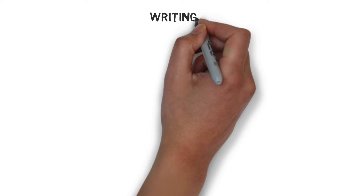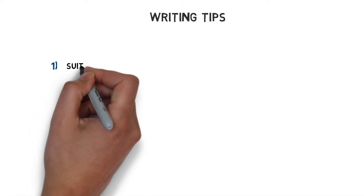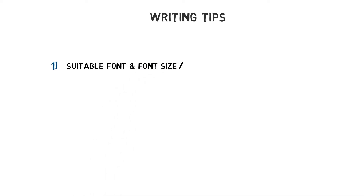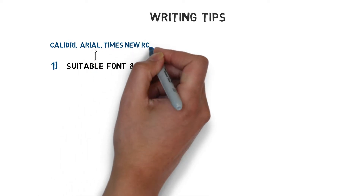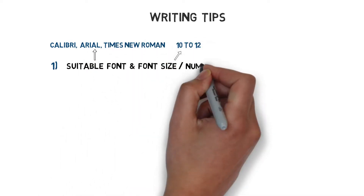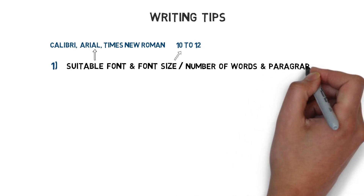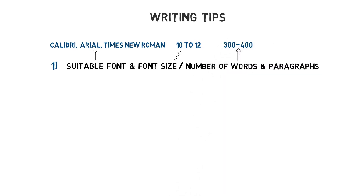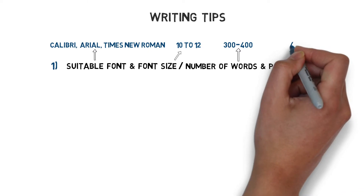Before I start writing the example letter, let me first emphasize the most important writing tips for machine learning engineers. Firstly, a professional cover letter requires a formal font and font size that is easy to read. You can pick Calibri, Arial, or Times New Roman with a 10 to 12 point font size. Furthermore, stick to a one page document with around 300 to 400 words and divide your letter into four paragraphs.